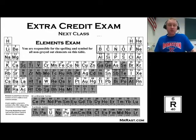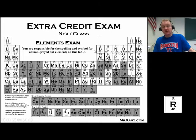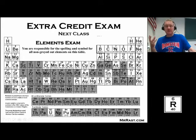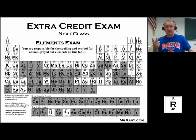Next class, I'm going to give an extra credit exam. You have one class period to prepare for it. The elements on the slide that are not grayed out are common elements we'll be using in class a lot for practice problems, labs, and so on. I'd like you to start getting familiar with the names of these elements and their symbols. Chemistry is like three classes in one — it's a math class, it's science, and it involves the periodic table.